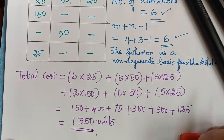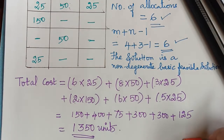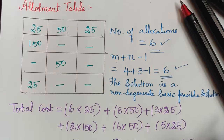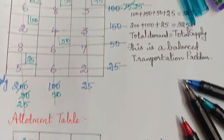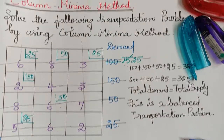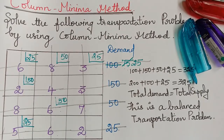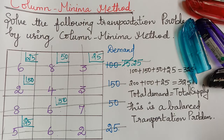Hope you have understood the problem. This is the column minima method. In our next video we shall learn about Vogel's approximation method, which will give the most appropriate value. Thank you.